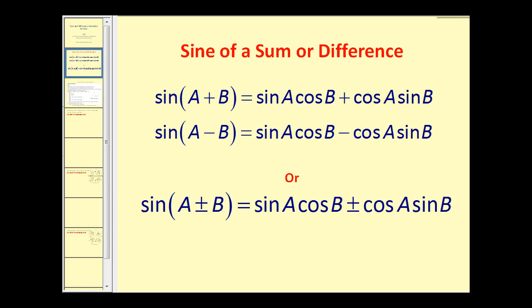The sine of a sum or difference are equal to the following. The sine of the quantity (a + b) is equal to sine(a) times cosine(b) plus cosine(a) times sine(b). And the sine of the quantity (a - b) is equal to sine(a) times cosine(b) minus cosine(a) times sine(b).